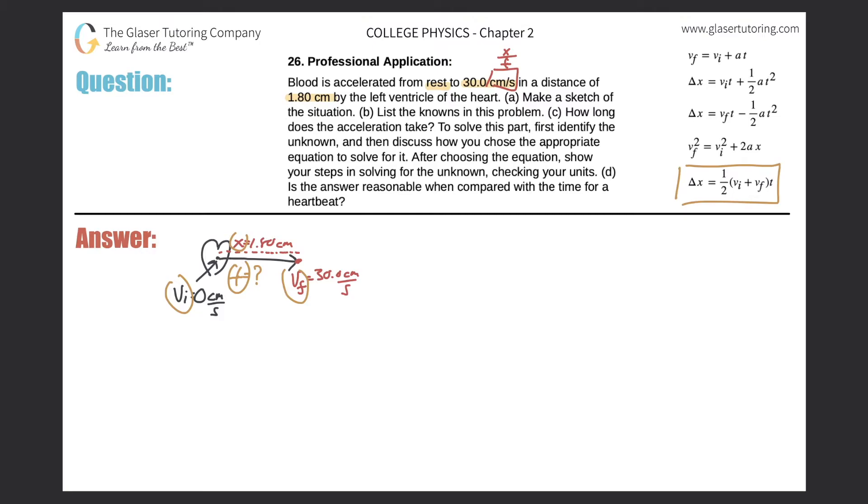So let's take a look. Let's rewrite it. We have change in displacement is equal to one-half of the initial velocity plus the final velocity times time. So let's see what we got. The displacement was 1.80 centimeters, multiply by one-half times the initial velocity, which was zero, plus 30.0.